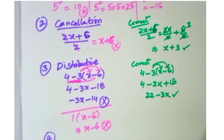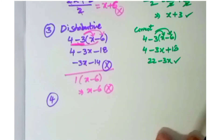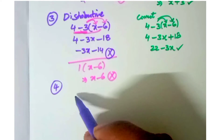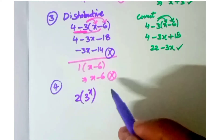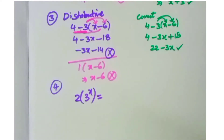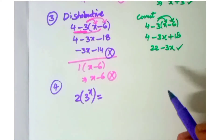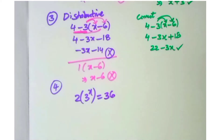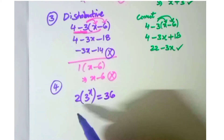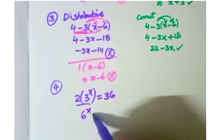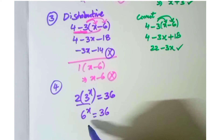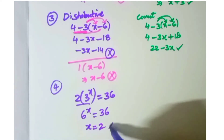The fourth error is multiplying the base of a power — an error with exponential laws. For example: two into three power x equals 36. The mistake students make is multiplying the bases: they write six power x equals 36, then say six power one equals six and six squared equals 36, so x equals two. That is the wrong process.